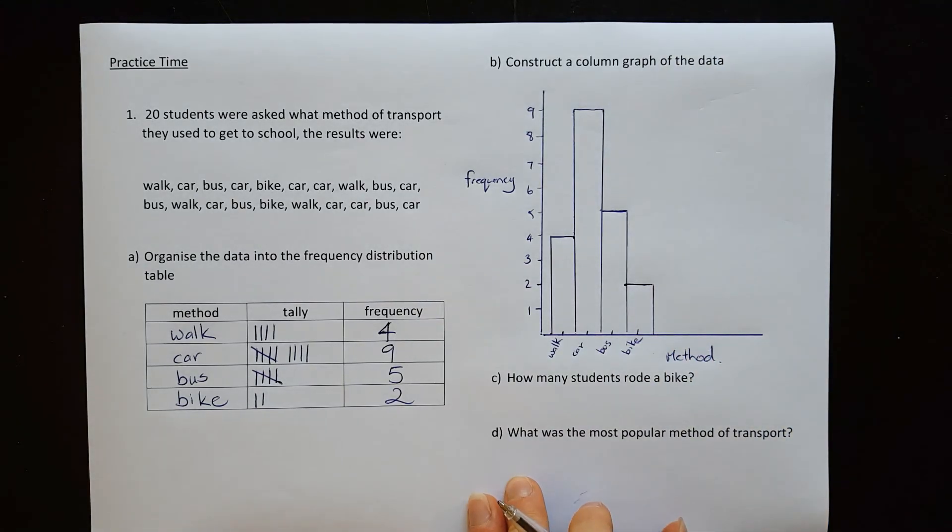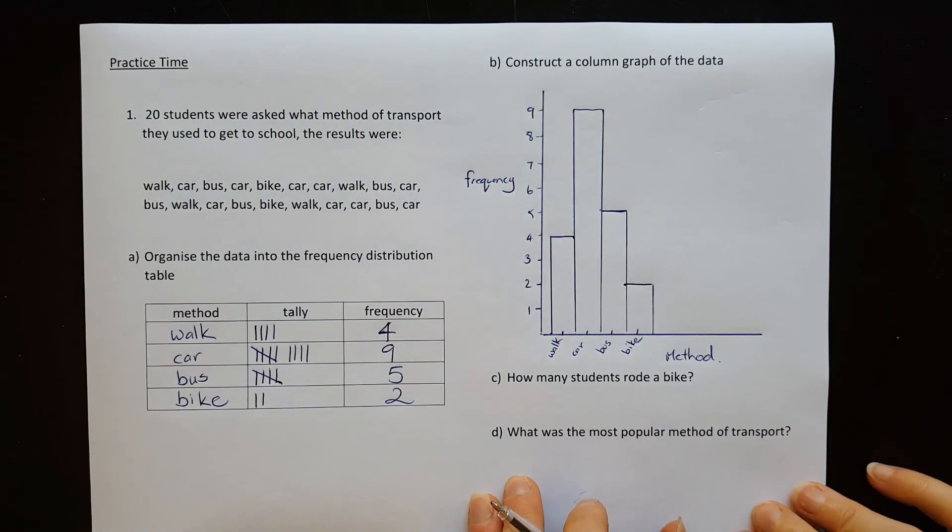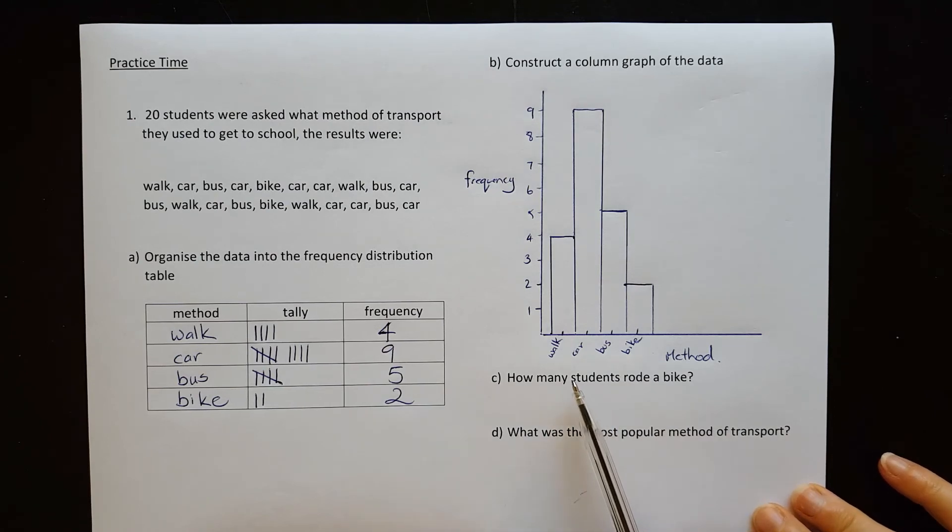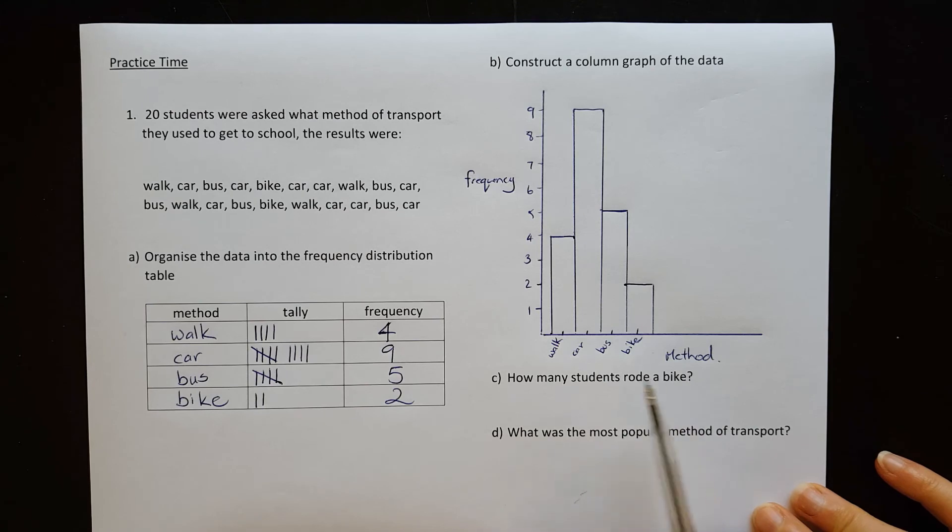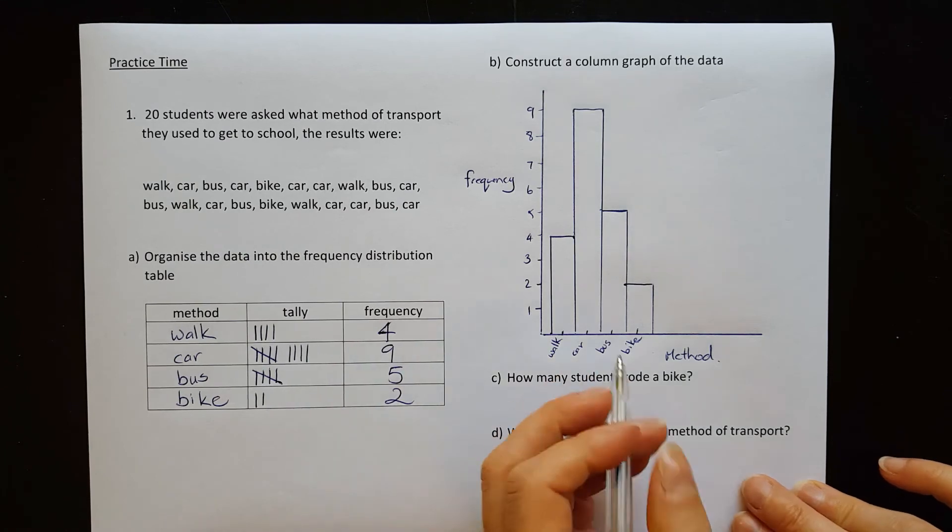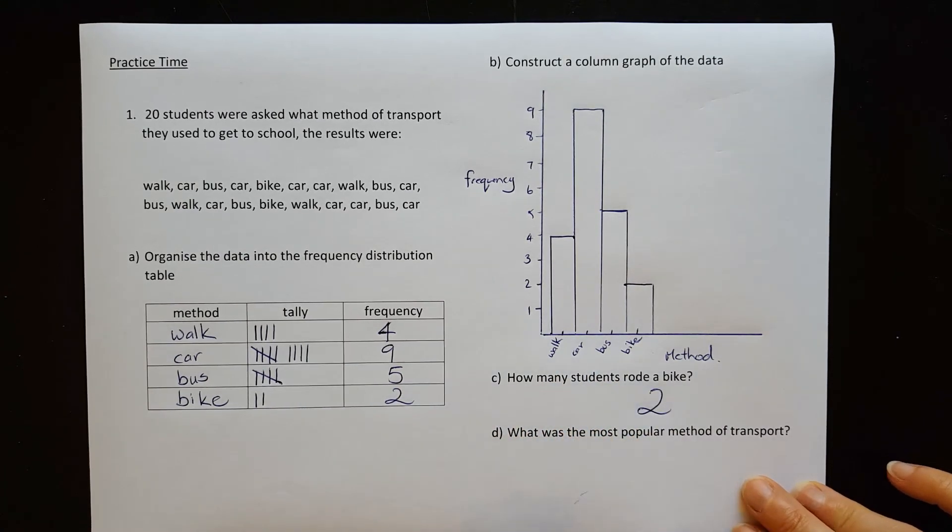There it is. There is our column graph. A few questions to answer now. How many students rode a bike? Well, we can read that from our graph. Here is bike and there was two. Or we could also get that from the table. So two students rode a bike. What was the most popular method of transport? That's going to be the biggest column, which is car.